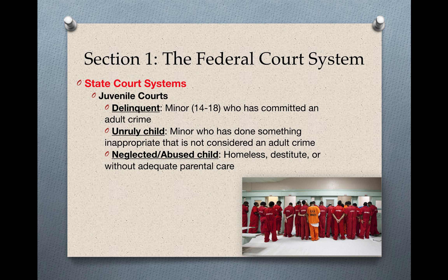Diving more deeply into juvenile courts, the definition of a delinquent is a minor, generally between the ages of 14 and 18, who has committed an adult crime.